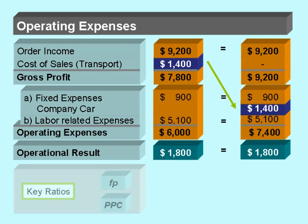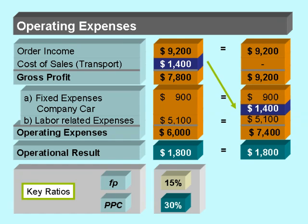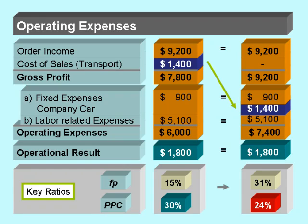But when we look at the key ratios, we see that in the first case FP is 15% and we have a profit per cost of 30%. In the second case we have increased our fixed percentage to 31% and we have a profit per cost of 24%. So although we have exactly the same operational result, the quality is different — the fixed percentage is higher and we achieve the result with a lower profit per cost.